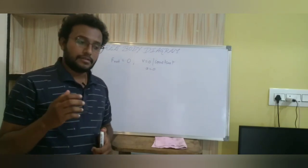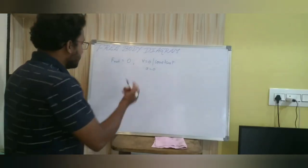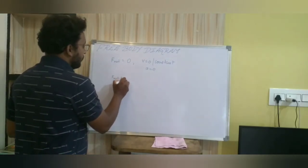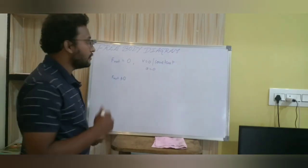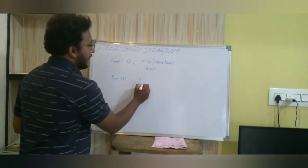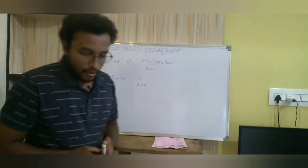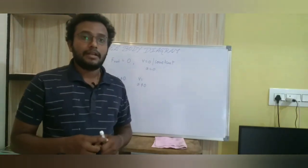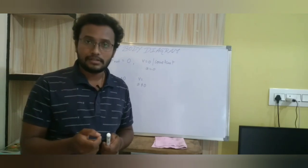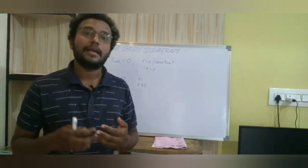Similarly, the same system can be non-equilibrium. In such case, exactly opposite to the previous one, net external force is not equal to zero, where velocity is not constant, which means acceleration is not zero. This free body diagram will help us to visualize the number of forces, moments, and reactions on a mechanical system.